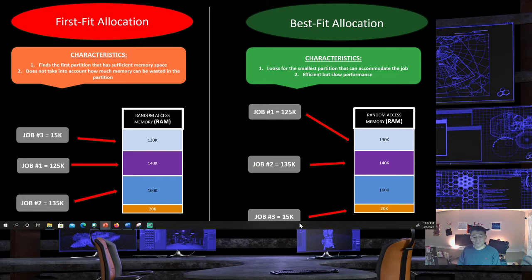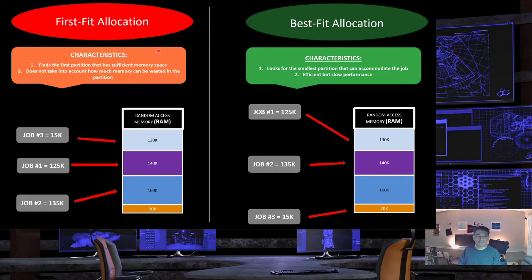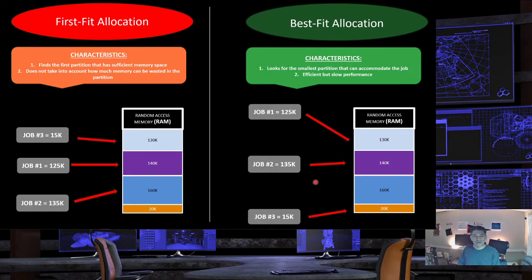Finally, job three requires 15K and instead of using the 160K partition, best fit allocation finds the 20K partition, which is the smallest partition that can accommodate the job. This method is efficient because we are not wasting as much memory as with first fit allocation. However, it is slow in performance because cross-referencing job memory needs against available partitions takes time and processing power, making the operating system a bit slower in allocating memory space.